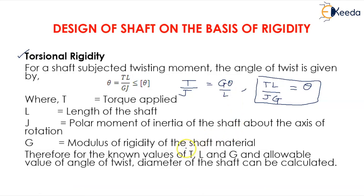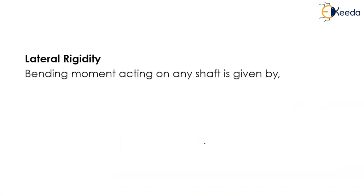Therefore, for the known values of T, L, and G, and allowable value of angle of twist theta, the diameter of the shaft can be calculated. Next is lateral rigidity. Bending moment acting on any shaft is given by M equals EI d²y/dx².